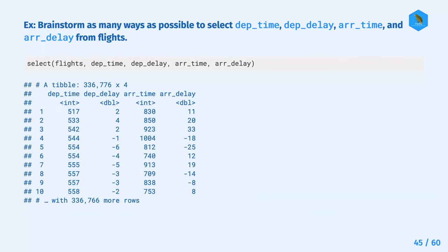The first option is the most straightforward and obvious: explicitly name the variables you're interested in. The example states the data frame - flights - as the first argument, and the remaining arguments name the variables. We see a nice condensed data frame of just the variables we're interested in.